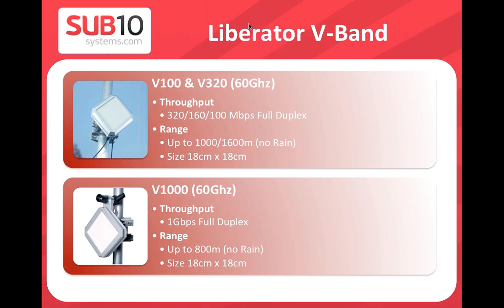Most V-band and E-band systems work as frequency division duplex (FDD). You have full duplex capacity — one frequency from terminal A to B and another from B to A. The V100 provides full-duplex Fast Ethernet, meaning 100 megabits bidirectional — 200 megabits aggregate throughput — with a range of around 1,000 to 1,600 meters in no-rain conditions.